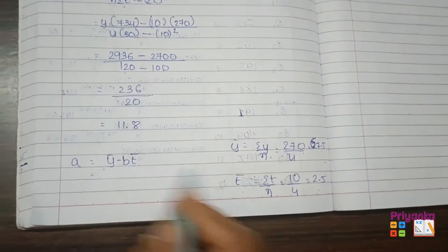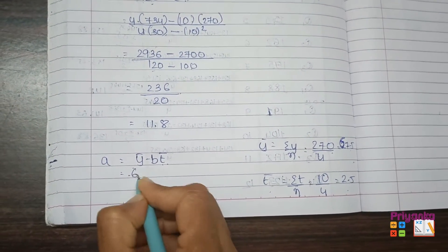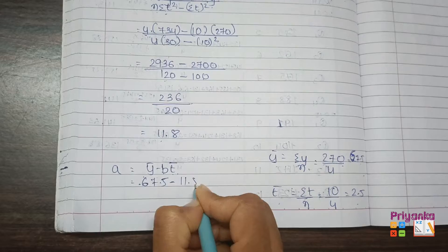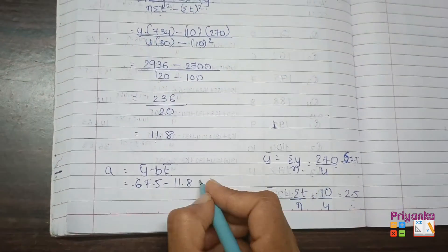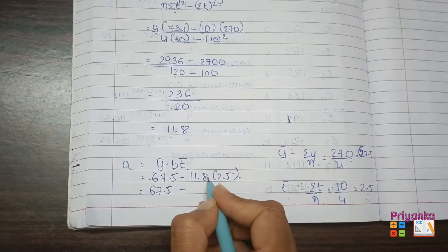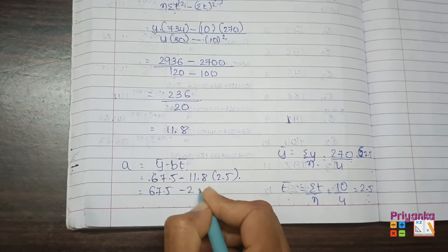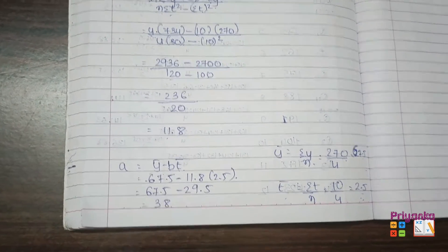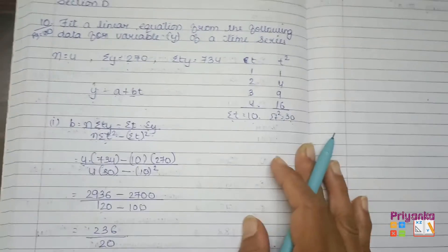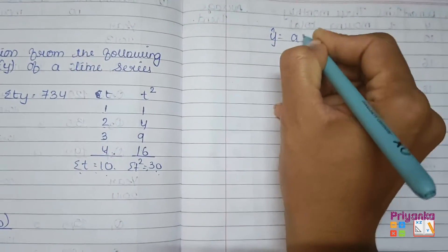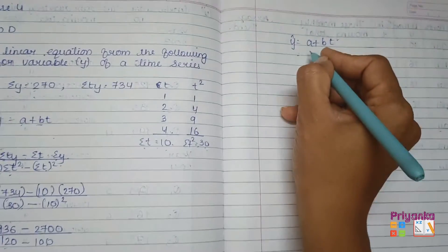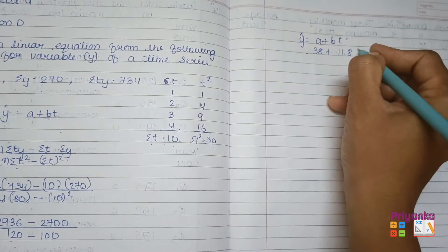Sigma t here we got is 10 divided by 4, the answer is 2.5. So let's put into the formula: y bar value is 67.5 minus b 11.8 times t bar 2.5. So 67.5 minus 29.5 equals 38. So here we get the value of b as well as a, so now we can find out the linear equation of trend: y cap equals a plus b t. First we'll keep the value of a, that is 38 plus b, that is 11.8 t.